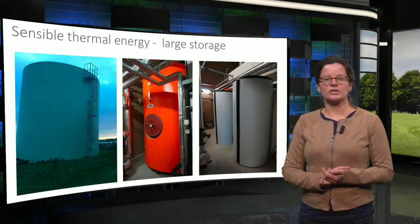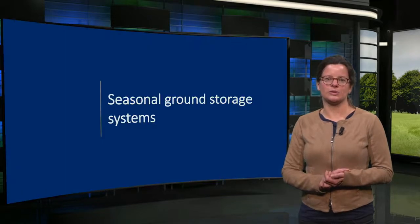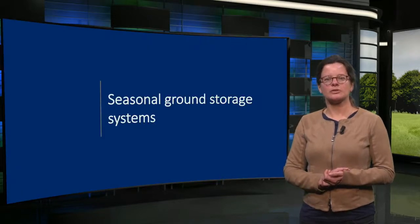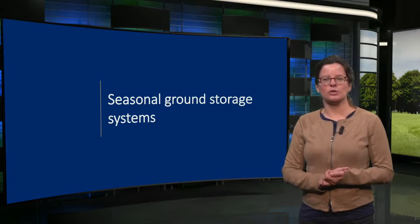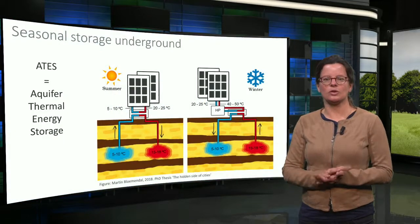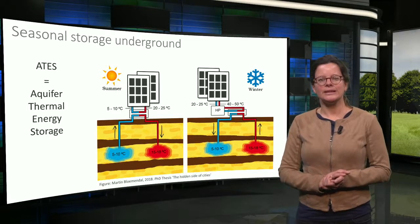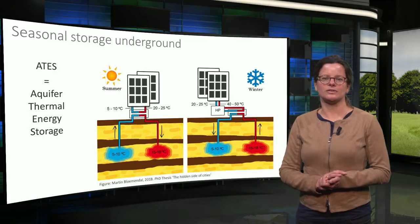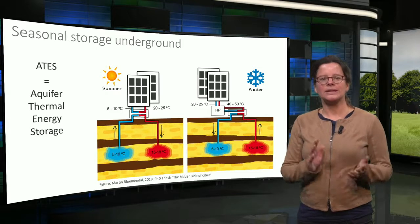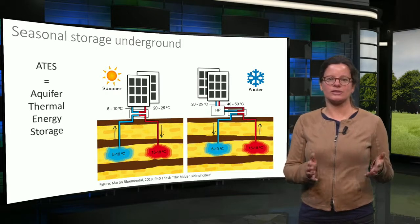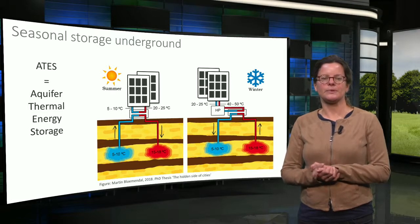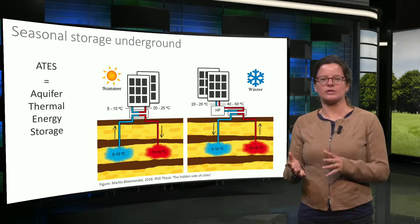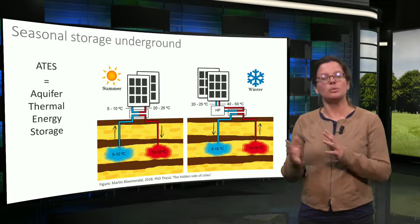Therefore, the subsurface is often used for seasonal thermal energy storage. Subsurface aquifers — underground layers of sand with groundwater — can be used to store heat. These systems are called ATES systems, aquifer thermal energy storage. In these systems two wells are drilled, which will become a cold well and a warm well. In summer, groundwater is extracted from the cold well. It passes through a heat exchanger in order to cool a building. The heat from the building is transferred to the groundwater, which is then injected into the warm well.